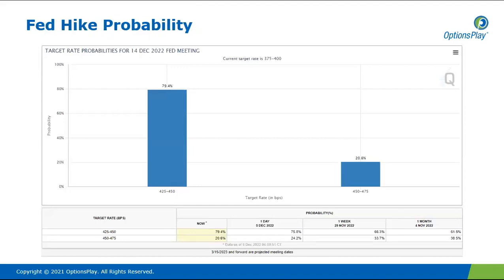Starting with the Fed hike probabilities, the next meeting is next week on the 14th of December. Currently, the target rate is 375 to 400. There are really two outcomes likely to happen: either a 75-point hike or a 50-point hike. A 50-point hike would take the current target rate to 425 to 450, and a 75-point hike would take it to 450 to 475. The probability of a 50-point hike remains elevated and has stayed elevated for almost a month since last month's CPI announcement. We are definitely expecting that 50-point hike — it has been priced in.